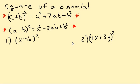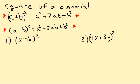Let's look at some special products. We have (a + b) squared equals a squared plus 2ab plus b squared. And then we have another formula: (a - b) squared equals a squared minus 2ab plus b squared. Now let's use these formulas to multiply.